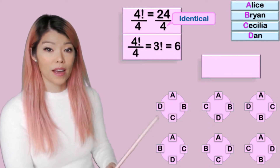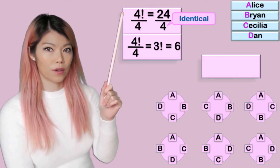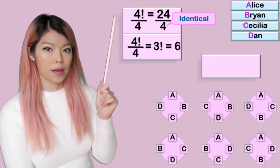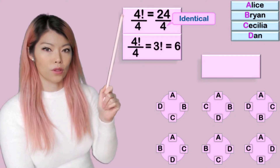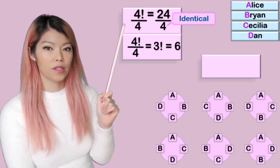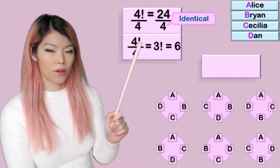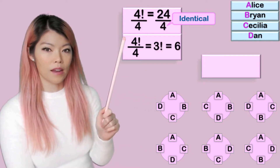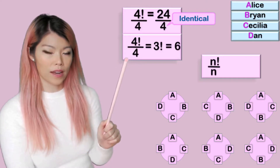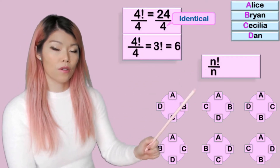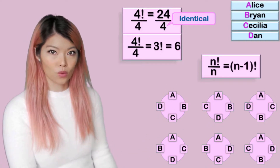So how do we work that out? It was 4 factorial if they were in a straight line. But because they're in a round table and each of those four arrangements were identical, we had to divide by four to get our six. In other words, if we had n objects in a circle, we would have n factorial over n.